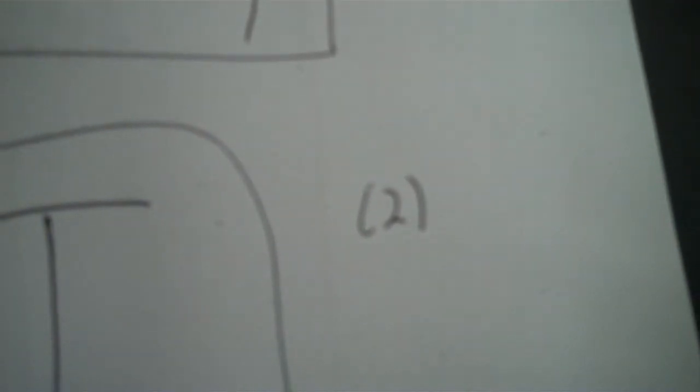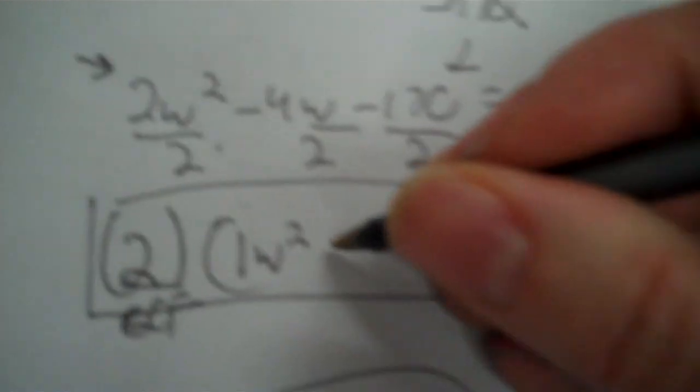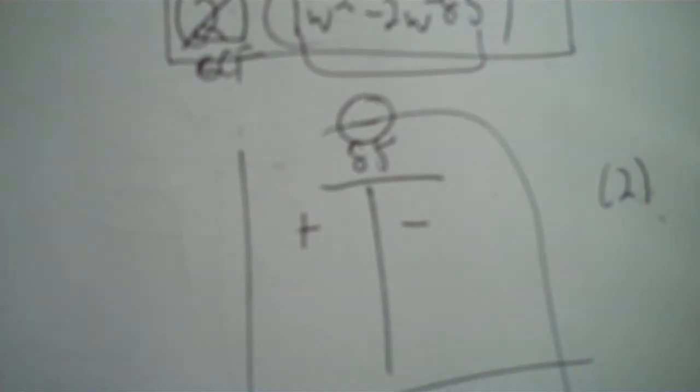That's three terms, so GCF and my table. No variable, no negative. I think those are all even, so I can factor out a 2. I'll put the 2 down here — it doesn't have a W, so I don't really use it to solve. So it becomes: 1W squared minus 2W minus 85. One times negative 85 is negative 85. The factors of 85: 1 and 85, 5 and 17. Five divided into 85 gives 17.